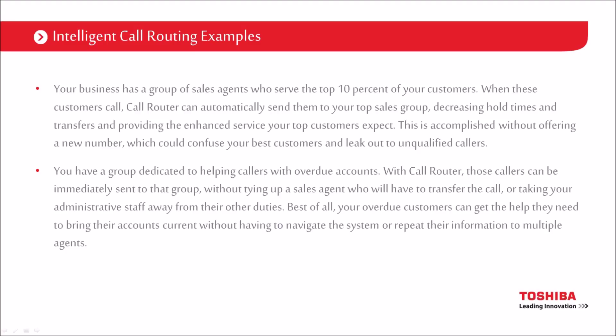Other examples of call routing: rather than give multiple numbers out, we keep the same golden number but identify our top 10 or 20% of customers by CLI and route calls based on that — prioritising the top 20% so they're bounced to the front of the queue. We also have a group of agents dealing with overdue accounts — if a call comes in and the account is on hold, we route to the accounts department before hitting the sales team, saving sales staff from dealing with accounts they can't get value from.